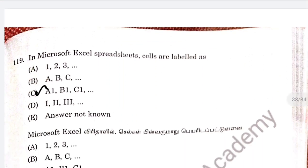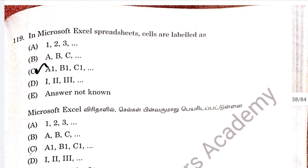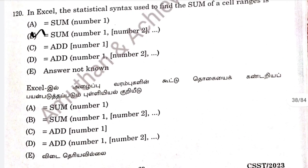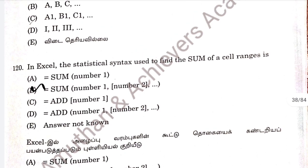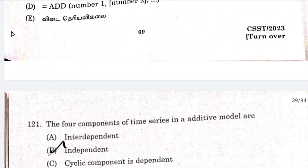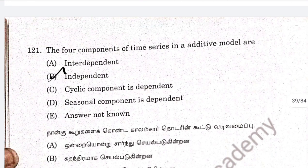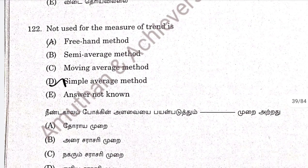Question 119: in a Microsoft Excel spreadsheet, the cells are labelled as option C — A1, B1, C1 and so on. Option C is correct. Question 120: in Excel, the statistical syntax used to sum is equal to SUM(number1,...). Option B. Question 121: the four components of time series in the additive model are independent. Option B is correct. Question 122: not used as a measure of central tendency — simple average method. Option D is correct.